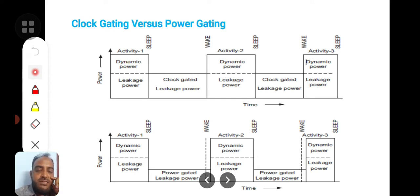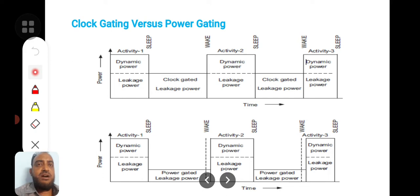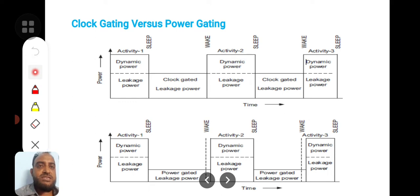Each transition incurs a power dissipation, so that power dissipation should not happen. To avoid that unnecessary power dissipation, we are clock gating the blocks wherever it is unnecessary — blocks which are not in current use are not supplied with the clock. If a circuit is not getting the clock, the power consumption due to clock switching will be reduced. That is the concept.